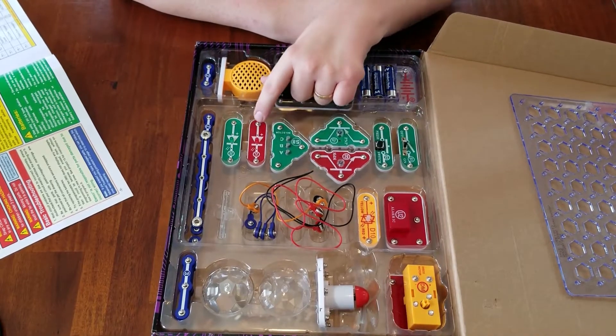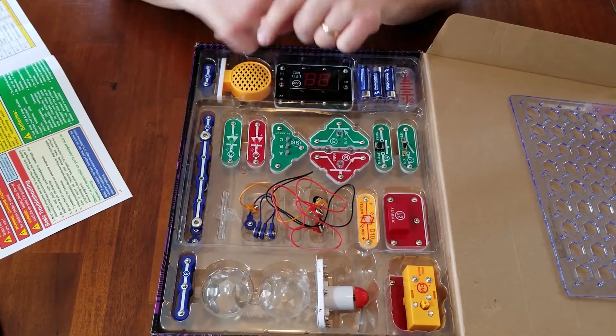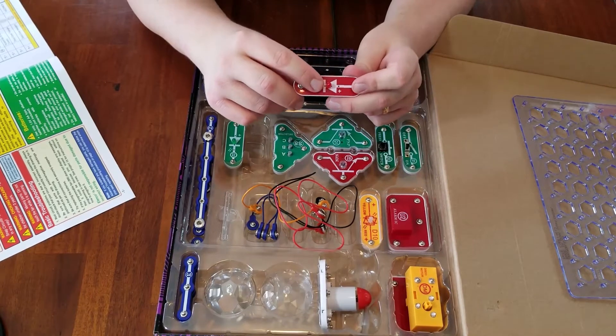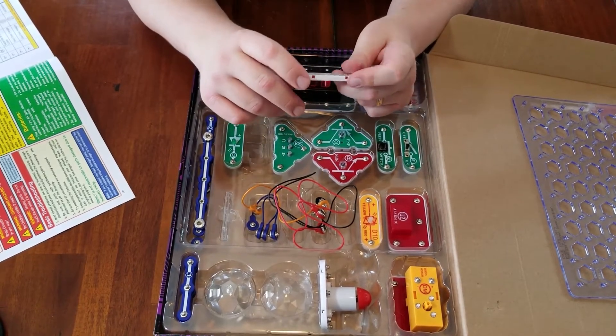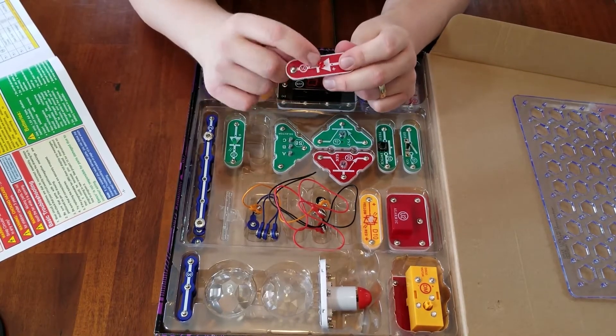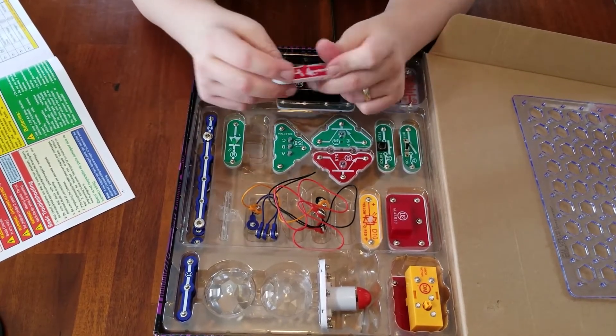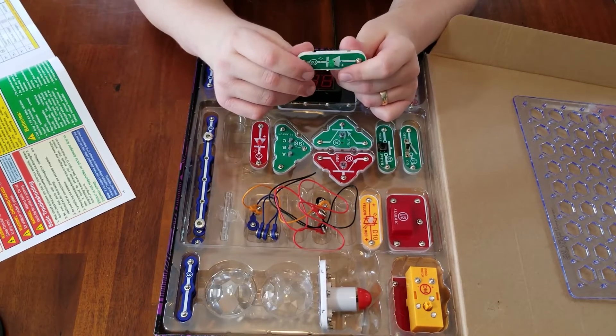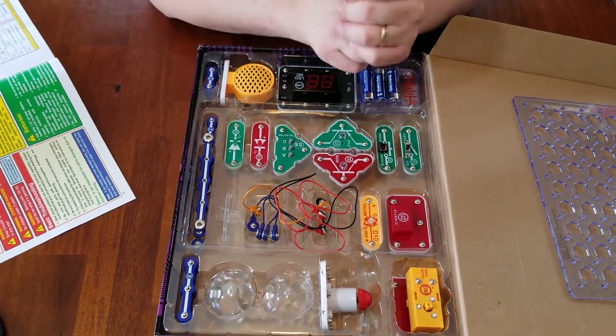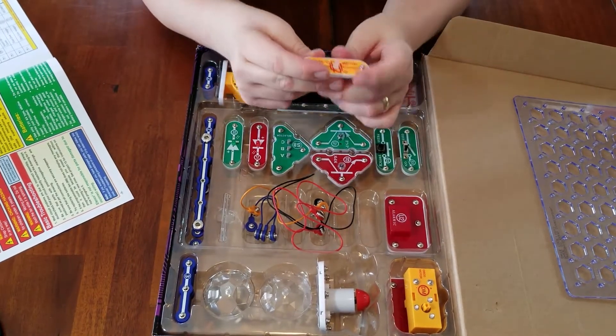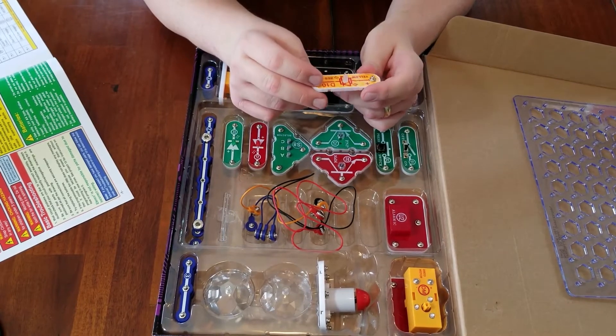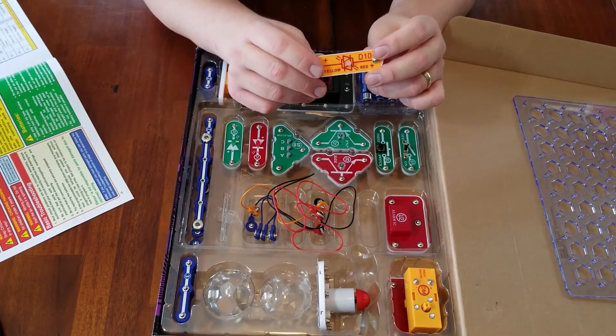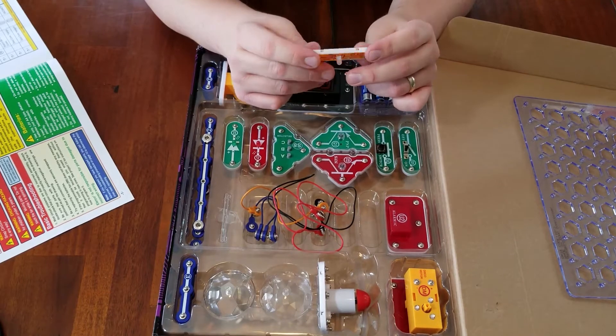So right here you have an LED diode, a red light emitting diode. This is totally replaceable because these LEDs will burn out at some point. Maybe a long time from now. But you just snap it back off there, put a new one on. They're very cheap. You can buy a ton of them on Amazon. And then you have a green LED light emitting diode. And over here you have a red-yellow bicolor light emitting diode. So sometimes it is yellow, sometimes it is red, depending on the current going through it.